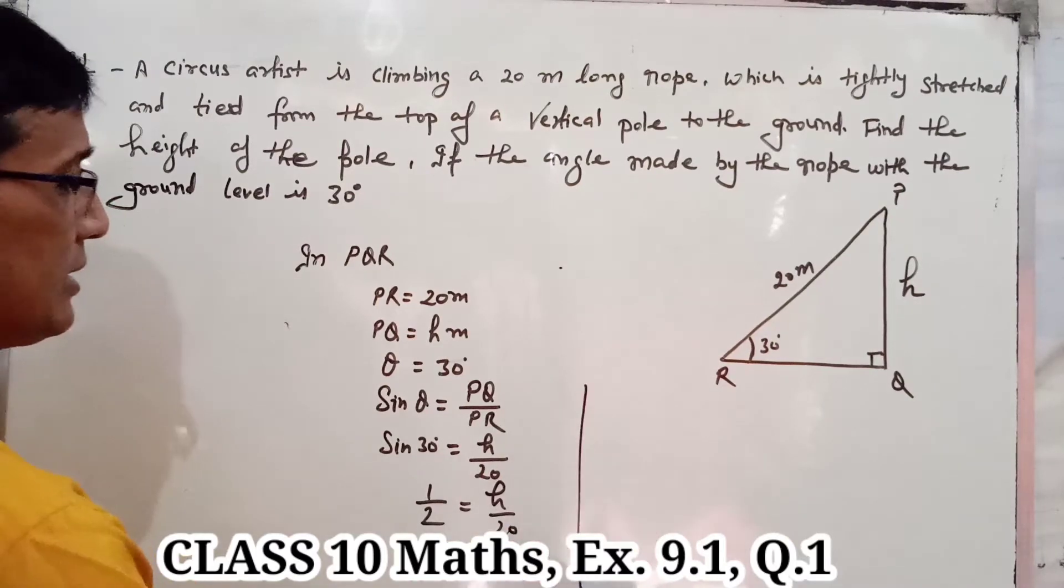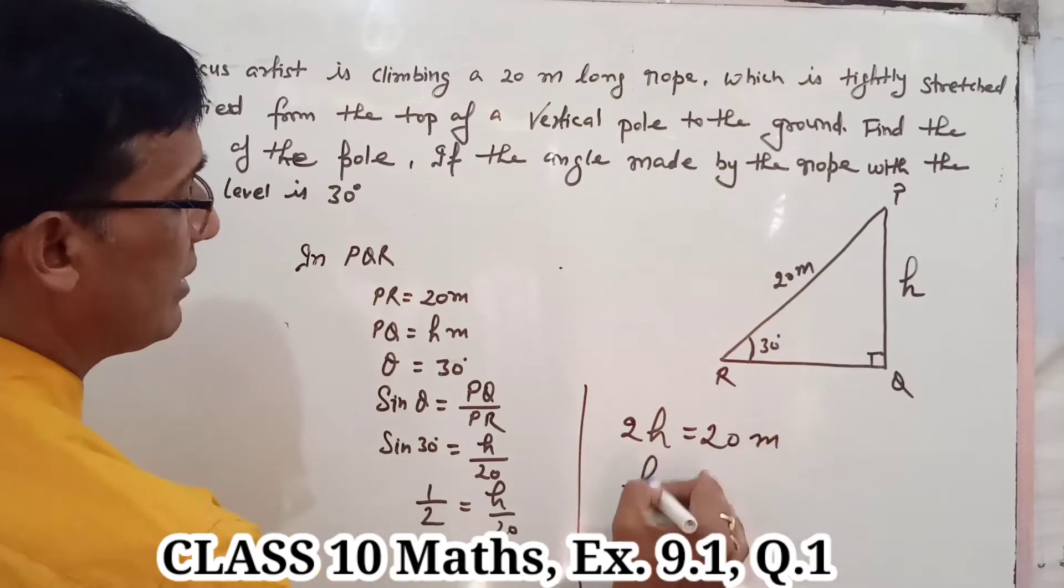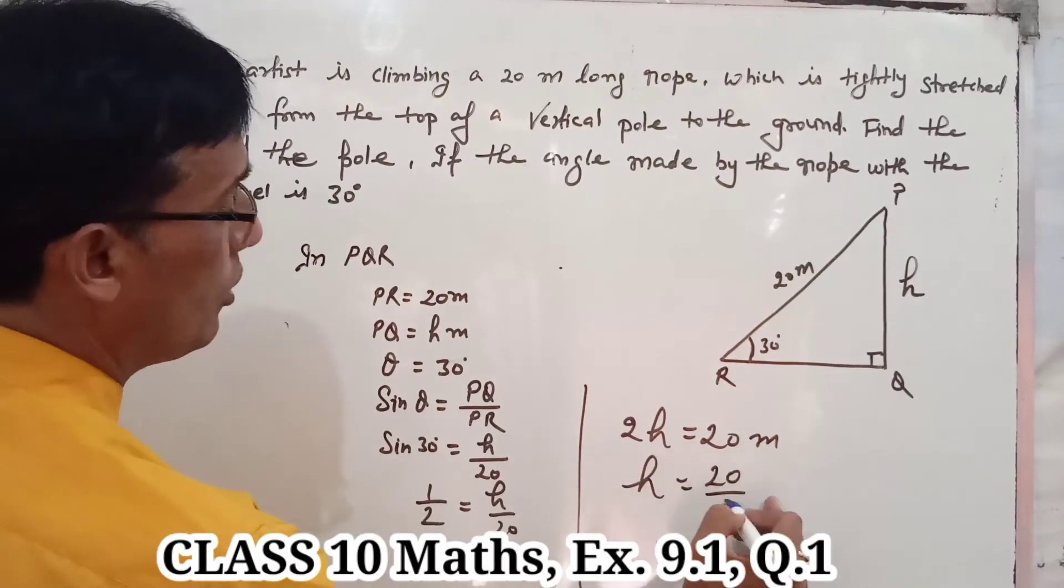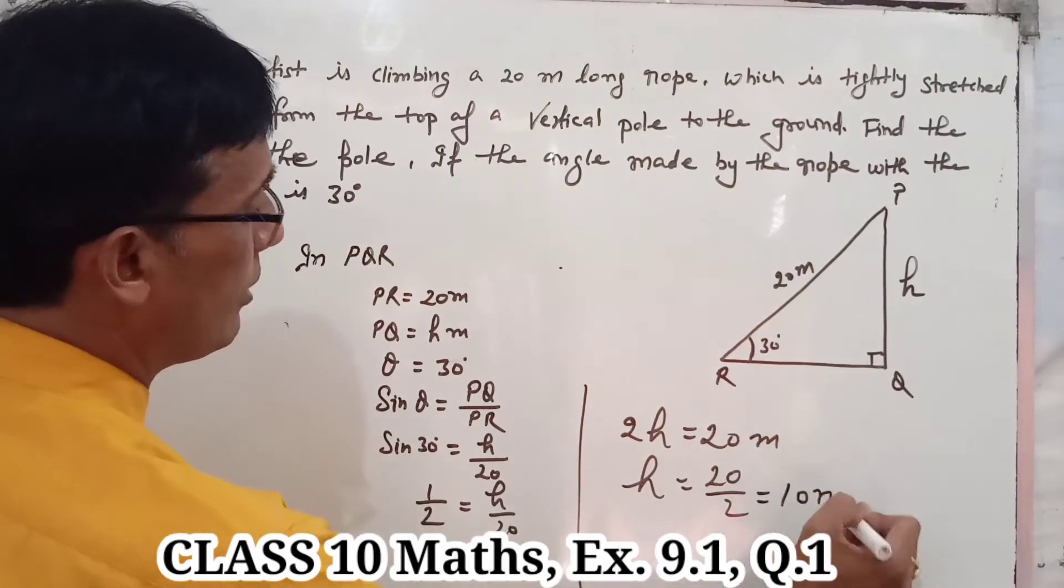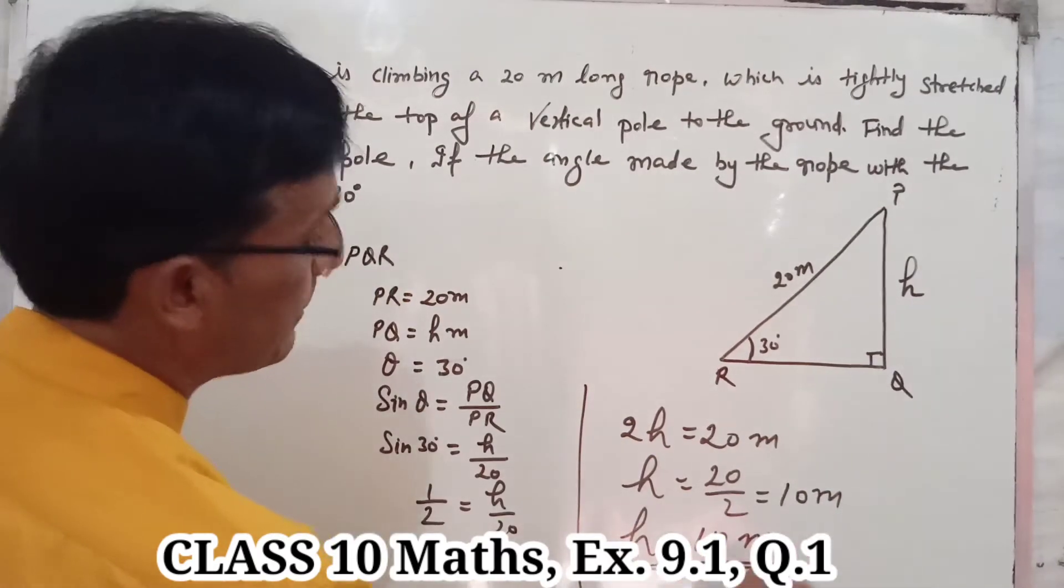Cross multiply: 2h is equal to 20 meters. Then h is equal to 20 upon 2, which is equal to 10 meters. So h is equal to 10 meters. Okay?